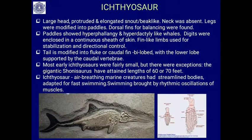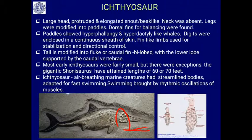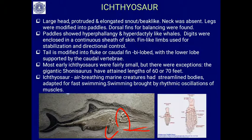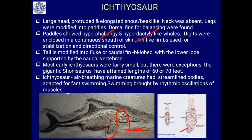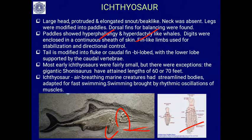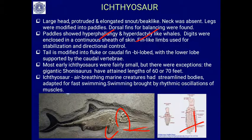Ichthyosaurs had a large head with an elongated beak-like protrusion, and the neck was absent. The legs were modified into paddles, similar to those of whales and dolphins. The dorsal fins provided balance. The paddles show hyperdactyly and hyperphalangy — meaning more than the usual five fingers and more than the usual three phalangeal bones per digit — similar characters to the flippers of dolphins and whales.